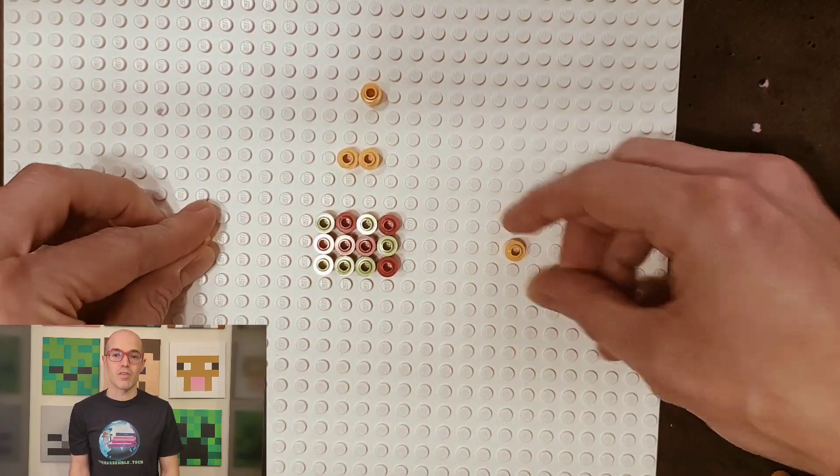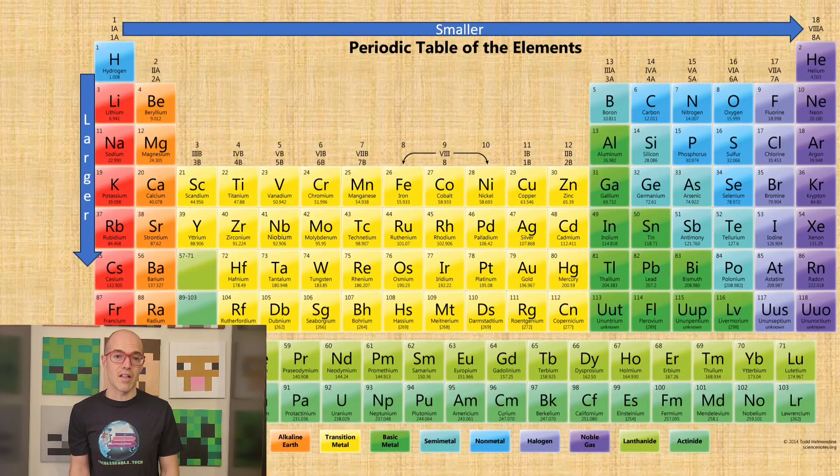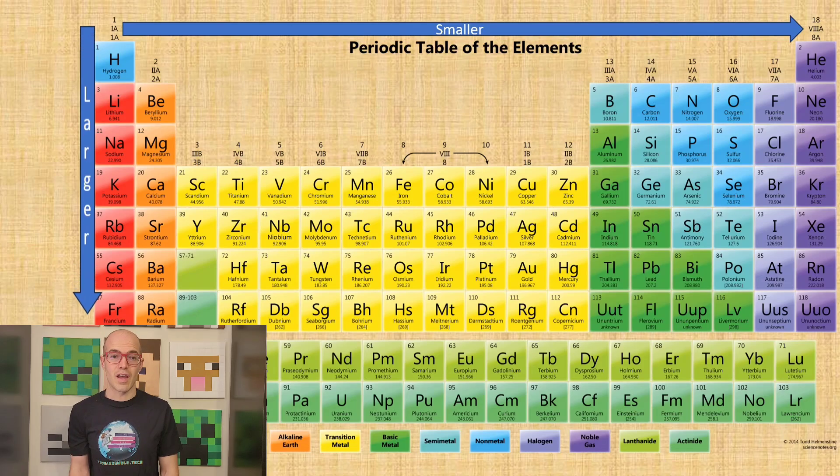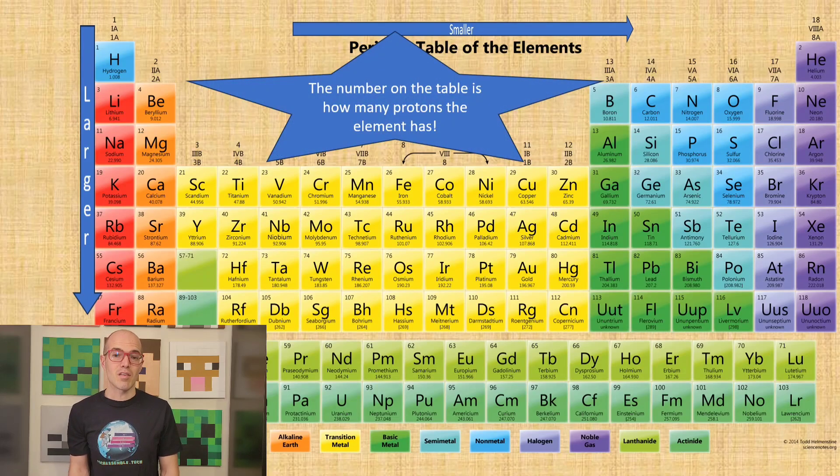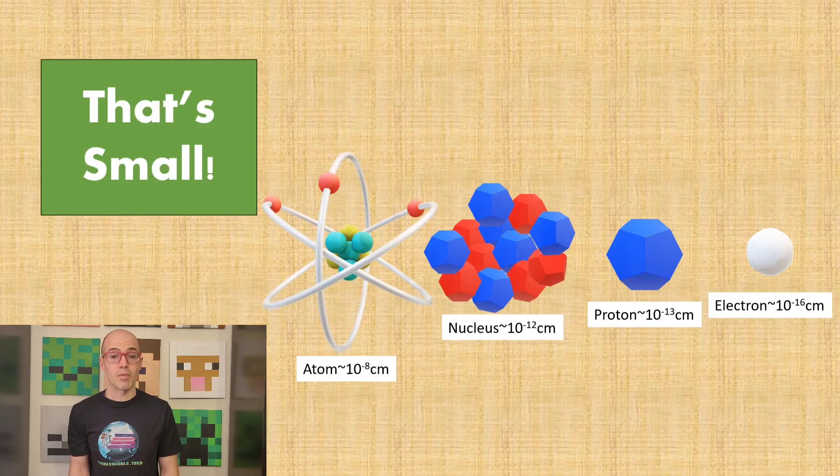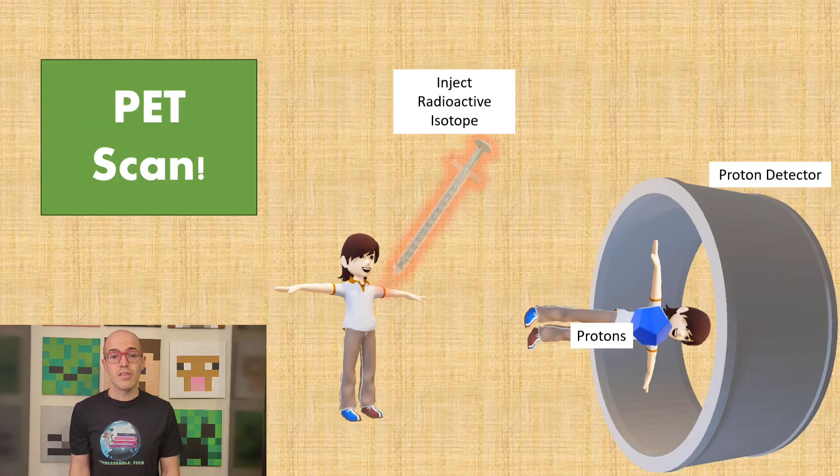The number of protons determines the atom's identity, defining it as a specific element on the periodic table. Atoms are incredibly small, with diameters in the order of picometers, yet their interactions govern the behavior of matter at both the microscopic and macroscopic scales. Understanding atoms and their properties is essential in fields ranging from chemistry and physics to engineering and beyond, shaping our understanding of the natural world and driving technological advancements.